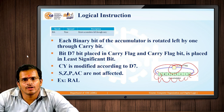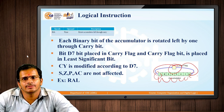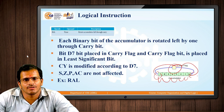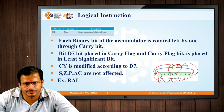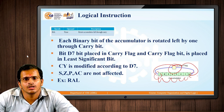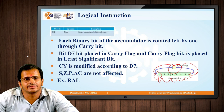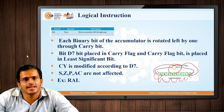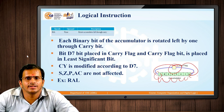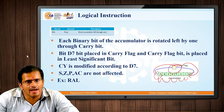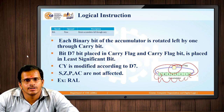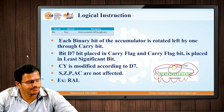The carry bit is modified because the D7 bit is passed on to the carry bit of the flag register. The instruction is RAL; all the other bits — S, Z, P, and auxiliary carry — are not affected by the RAL operation.